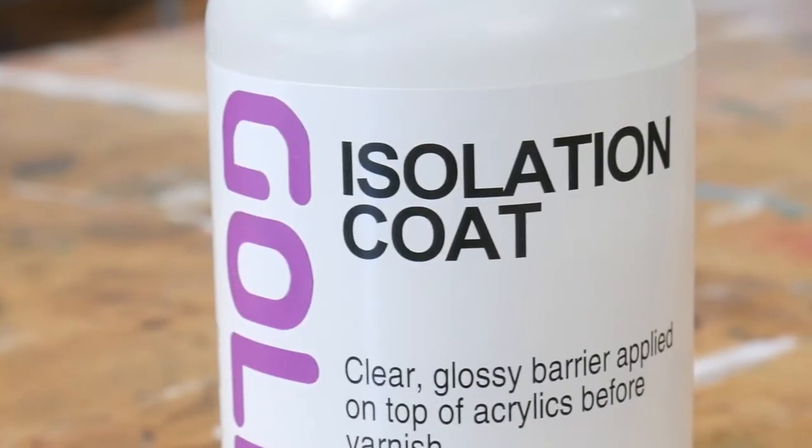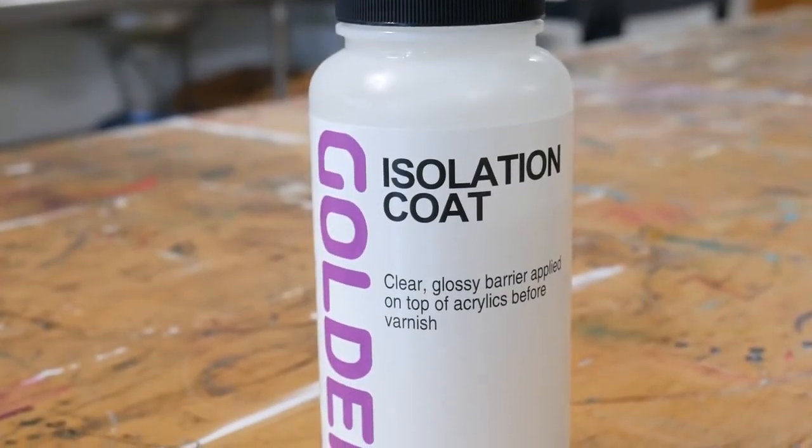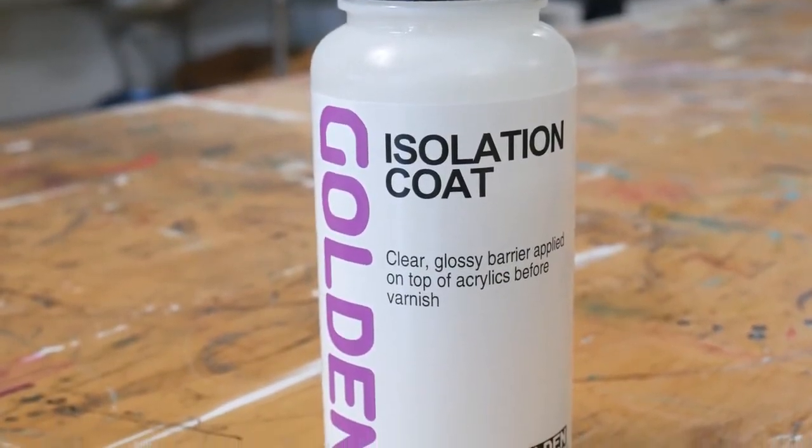Isolation Coat is a preparation for acrylic paintings that are going to be varnished. The product name describes its role in isolating acrylic colors from the removable varnish.